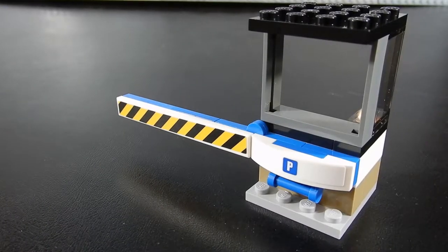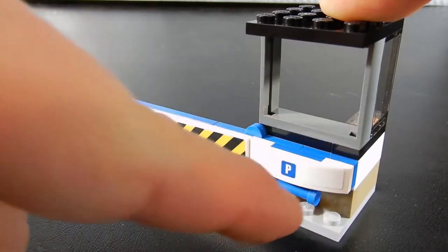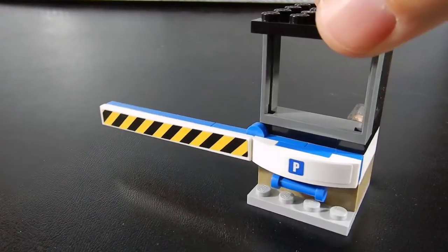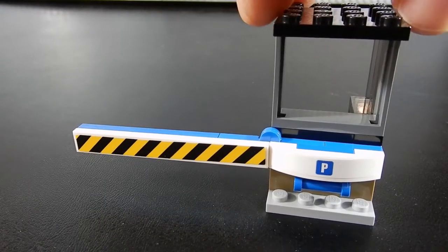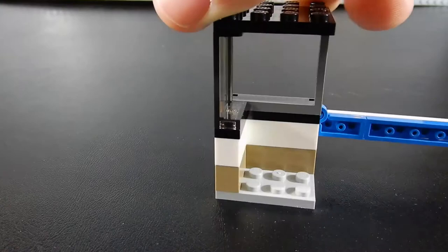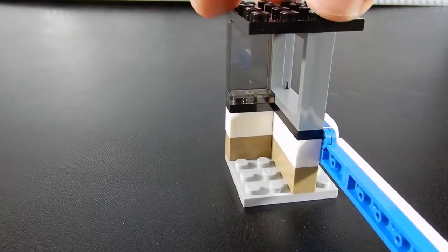Next we have the parking attendance booth. And this has a working gate. A little P logo for parking. The yellow and black stripes and the P logo are both stickers. And there's just enough room in the back for a minifigure to stand behind the window there.